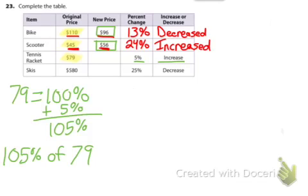We need to rewrite 105% as a decimal by moving the decimal point twice to the left. So we get 1.05. Of means multiplication, so 1.05 times 79 gives us 82.95.